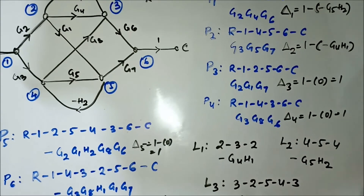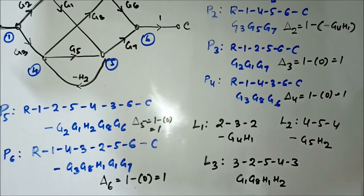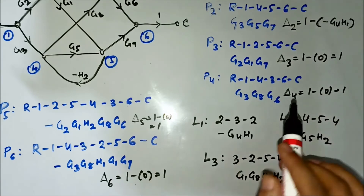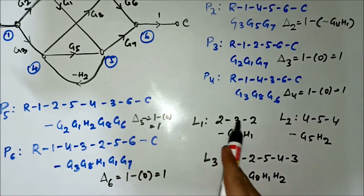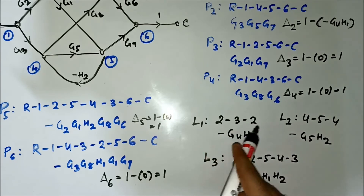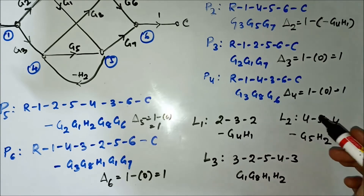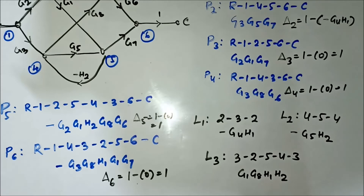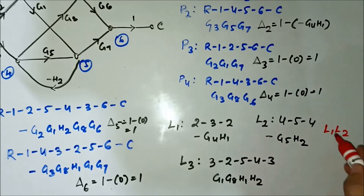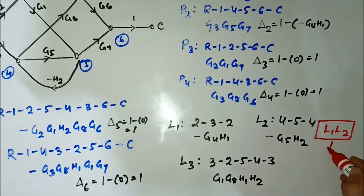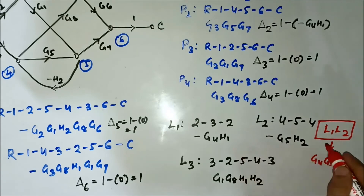We have now determined the forward path gains, loop gains, and path factors. Next we have to determine the non-touching loops — loops that have no nodes in common. L1 (nodes 2, 3) and L2 (nodes 4, 5) have no common nodes, so they are non-touching. L1 touches L3 because node 3 is shared; L2 touches L3 because nodes 4 and 5 are shared. So the only pair of non-touching loops is L1 and L2, with combined gain G4 × G5 × H1 × H2.